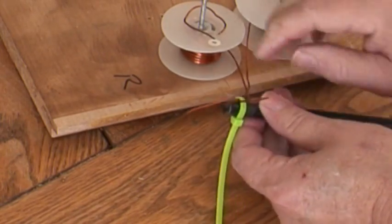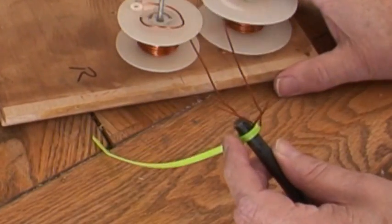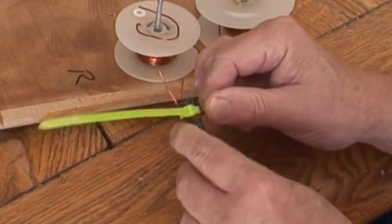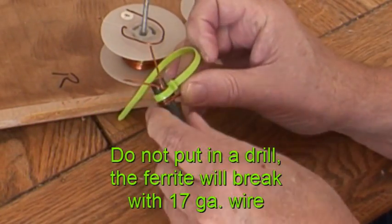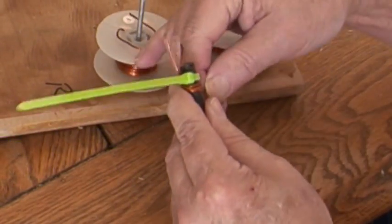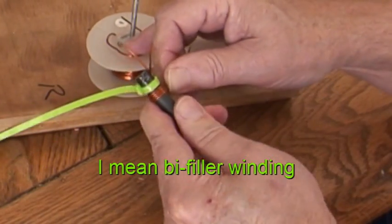So then all you have to do is, you might want to cut that end off to make it a little bit easier, but just hold it tight and start wrapping. Okay, you can see this is a bi-filer winding. Make sure that they stay on track like you see here.